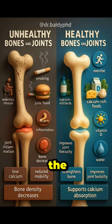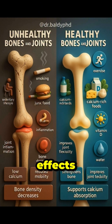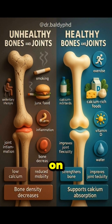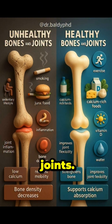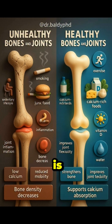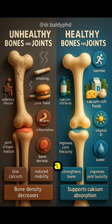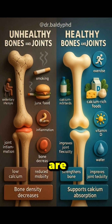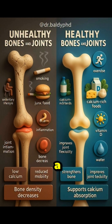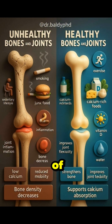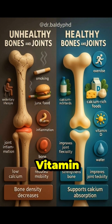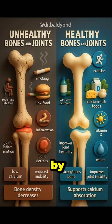Healthy bones and joints: exercise is depicted as a person running. Calcium-rich foods are represented by a bottle of milk, cheese, and eggs. Vitamin D is symbolized by a sun.